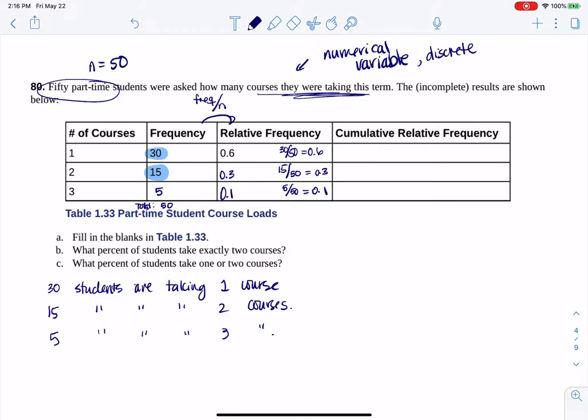And you'll see that these three numbers, they total out to 1, and they should. Your relative frequency column should always total out to 1.